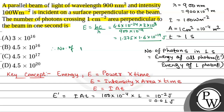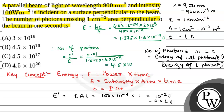Therefore, number of photons will be equal to energy of all photons E-dash divided by energy of one photon E. That will be equal to 0.01 by 1.375 into 1.6 into 10 to the power minus 19. On solving this, we will get it as 4.5 into 10 to the power 16. So the correct option will be option B.